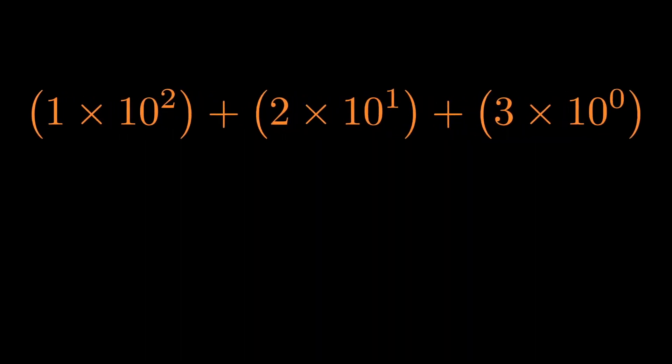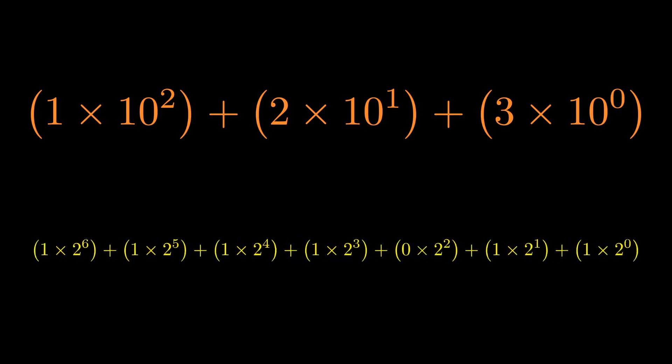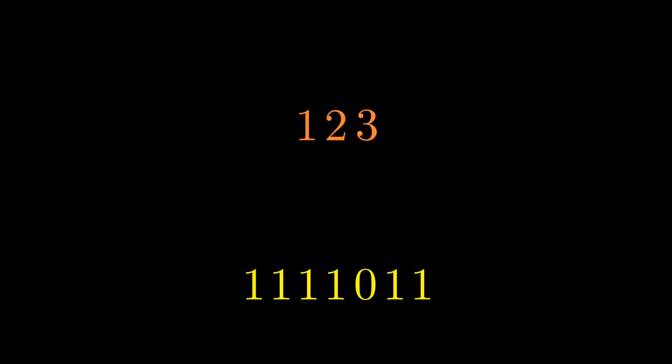So whereas in normal base 10 numbers, you'd write something like 1, 2, 3, which is the number 123, and the notation 1, 2, 3 simply means 1 times 10 squared, plus 2 times 10 to the first power, plus 3 times 10 to the zeroth power. Well, in binary, you would write the same number as 1, 1, 1, 1, 1, 0, 1, 1, which simply stands for 1 times 2 to the sixth power, plus 1 times 2 to the fifth power, plus 1 times 2 to the fourth power, plus 1 times 2 to the third power, plus 0 times 2 to the second power, plus 1 times 2 to the first power, plus 1 times 2 to the zeroth power, which in fact does add up to 123 if you actually do the math.